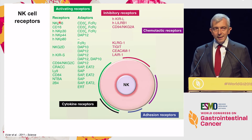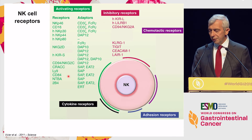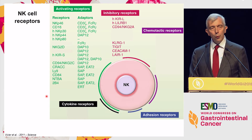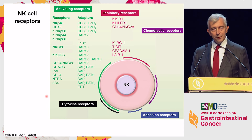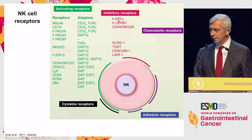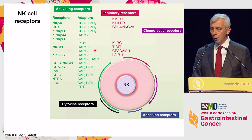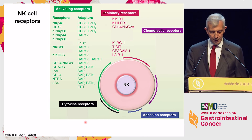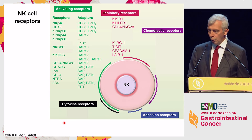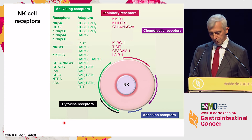What would NK cells recognize to be activated? Well, the choice is large. This shows all the activating receptors on our NK cells — not all NK cells express all these receptors, which makes it even more complex. And here are the inhibitory receptors, including those that are HLA class I-specific. So you see it's a complex world, and it can be difficult to identify exactly who is doing what in which tumor.